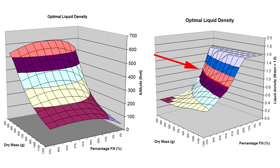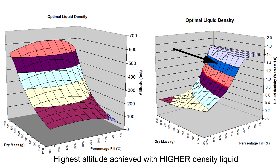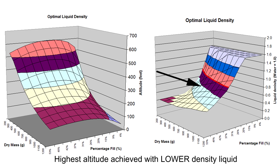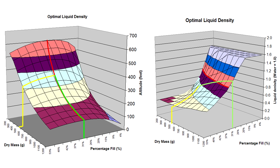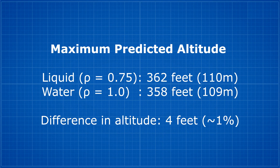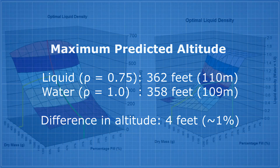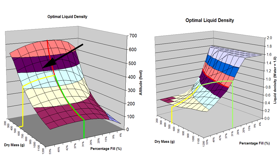This line represents the density of water. Anything on this side of the line means a higher density liquid achieved the greatest altitude, while everything on this side achieved the greatest altitude with a lower density liquid. For this particular rocket that weighs 550 grams, the optimal fill percentage is closer to 31% and it corresponds to a density of about 0.75. However, the difference in predicted altitude is only about four feet higher with the optimized density versus plain water — that corresponds to only about one to two percent of the overall altitude, so it's quite small. The more you move to the extremes of this graph, the greater the difference is between the density-optimized and non-optimized altitudes.